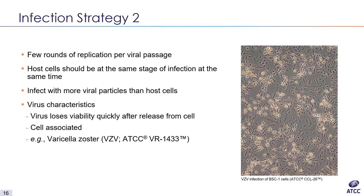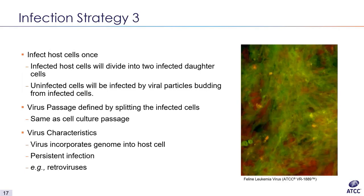The way we accomplish this is to infect the host cells with enough cell-associated virus that most of the uninfected cells become infected during the initial absorption step, ending up at relatively the same stage of infection during the harvest step.